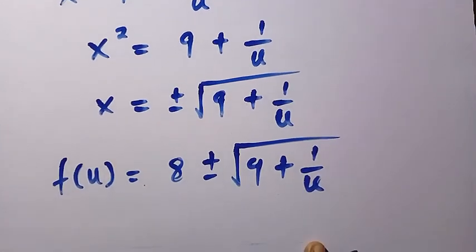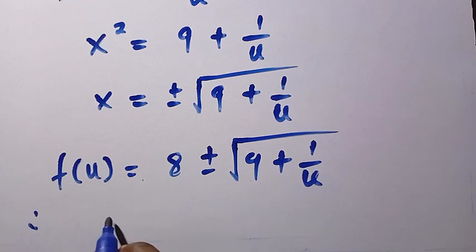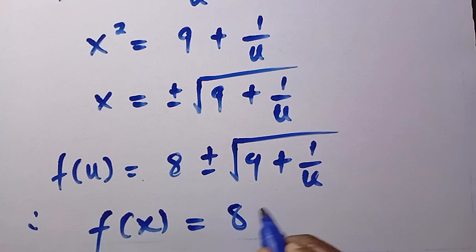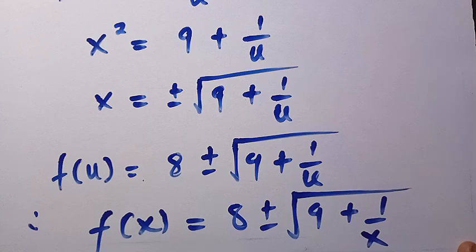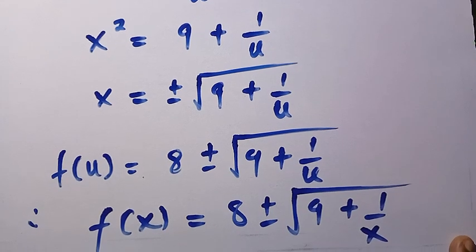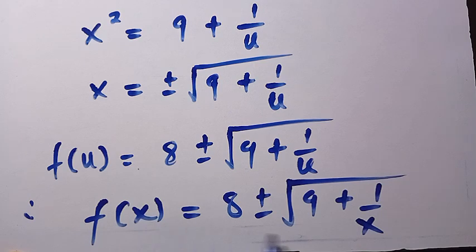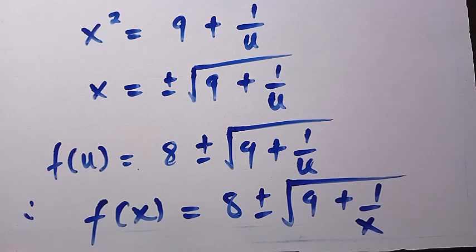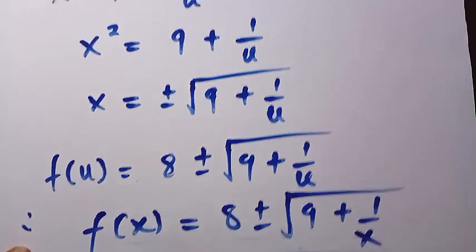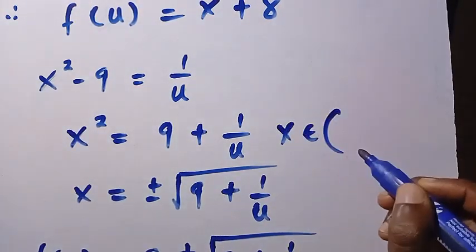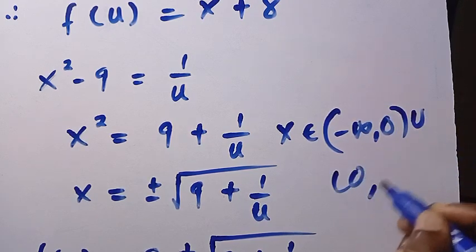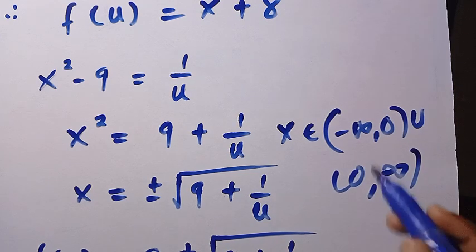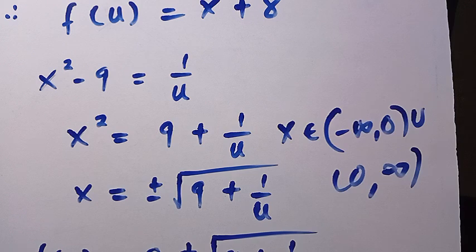By interchanging u with x, since we need to find f of x, we get f of x equals 8 plus or minus the square root of 9 plus 1 divided by x. The domain of this function is the same as the range obtained earlier: x must be a member of negative infinity to 0, union 0 to positive infinity. This is how to solve this problem.